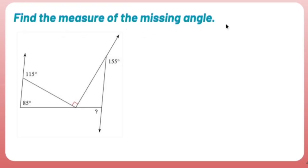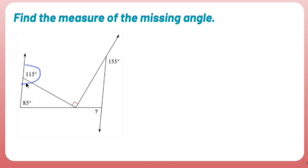Find the measure of the missing angle — it's all the way over here. When I have a problem like this I deal with triangles everywhere involving 180 degrees, and angles glued together making straight lines of 180 degrees. Starting from the left: 115 and the angle next to it create a straight angle, so I subtract 115 from 180 and get 65 degrees for that interior angle.